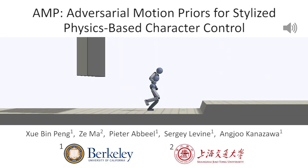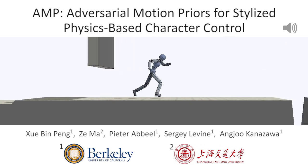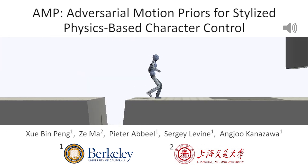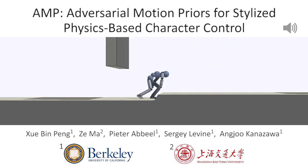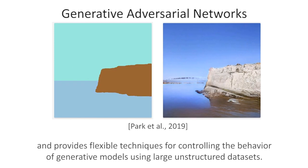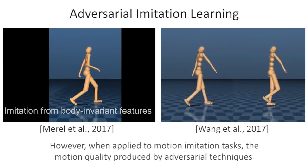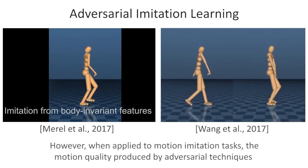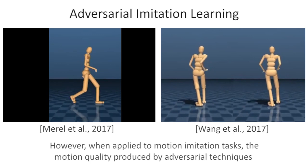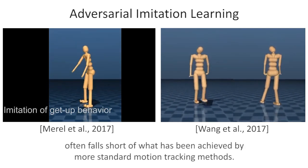In this work, we present an adversarial learning framework that enables physically simulated characters to perform challenging tasks by imitating behaviors from unstructured data sets containing diverse motion clips. Adversarial learning has been a powerful framework for solving synthesis problems, such as image generation, and provides flexible techniques for controlling the behavior of generative models using large unstructured data sets. However, when applied to motion imitation tasks, the motion quality produced by adversarial techniques often falls short of what has been achieved by more standard motion tracking methods.